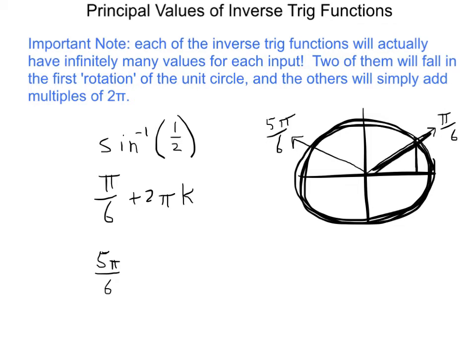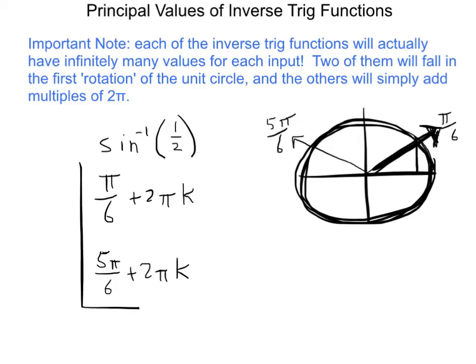We'll say π/6 + 2πk, indicating here I am at the π/6 answer and I'm looking at any other version of π/6. We can do the same for 5π/6: we write 5π/6 + 2πk. So effectively these are all of the answers of the inverse sine of 1/2.